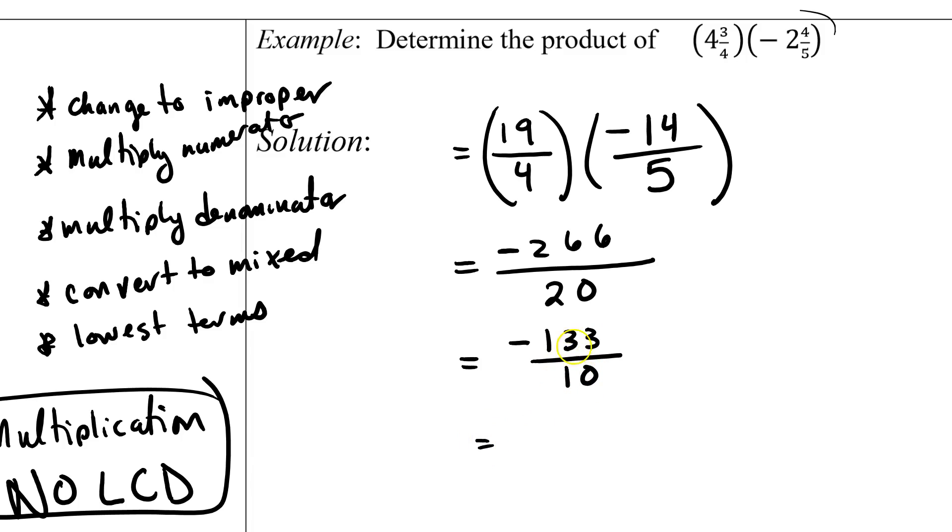10 goes into 133, or negative 133. It goes in negative 13 times, and then there's 3 left over. So my final answer, my final product, is negative 13 and 3 tenths.